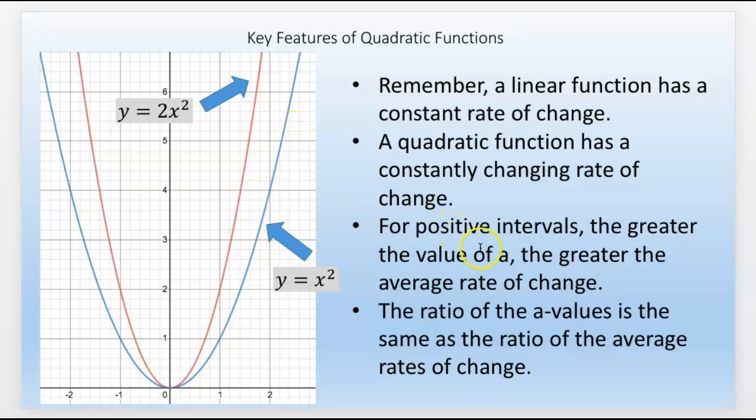Now for positive intervals, the greater the value of a, the greater the average rate of change. In this case, when it's 2x squared, this red quadratic, the curve is going up faster, twice as fast. So when x is 1, the blue goes up to 1, but the red goes up to 2. The ratio of the a values, so like 2 over 1, because this here the a is 1, it's the same as the ratio of the average rates of change for any interval at all.